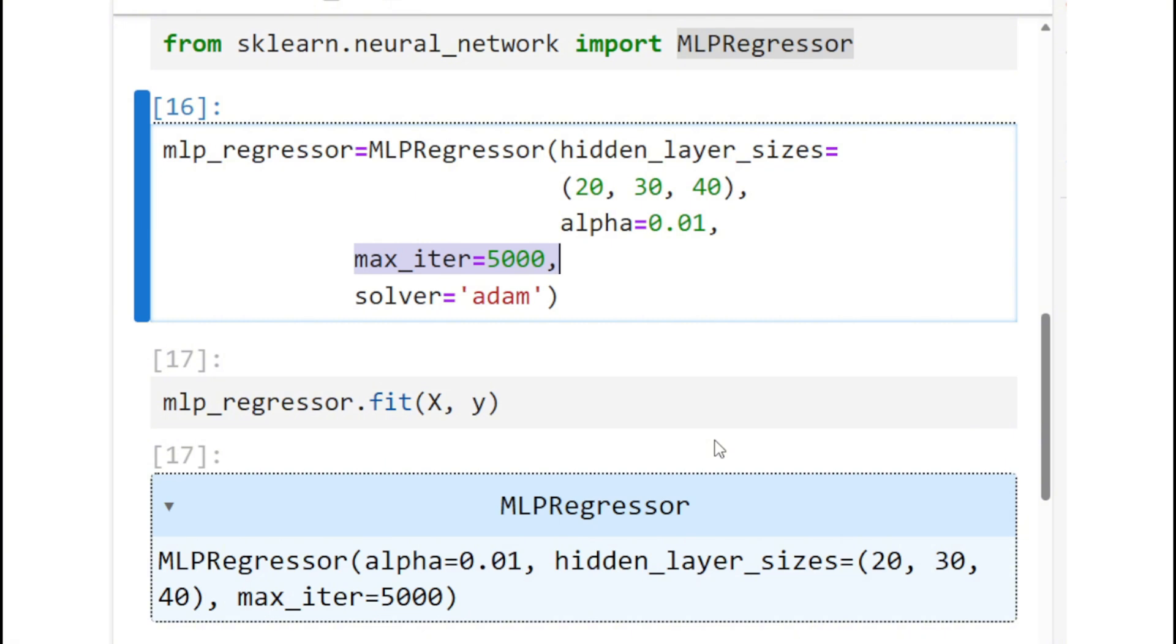But if you have another validation set, then you might see that after certain epochs, the validation loss has started to increase. That is the point you know that right after that epoch, the model overfitted, and that's why the validation loss is increasing even though the training loss is decreasing.